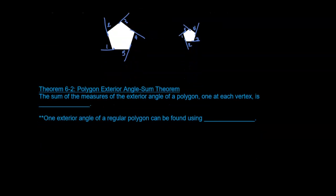That brings us to the polygon exterior angle sum theorem, which says the sum of the measures of the exterior angles of a polygon, one at each vertex, is 360 degrees. So no matter what shape you have, the exterior angles will always add up to 360 degrees.